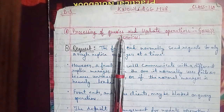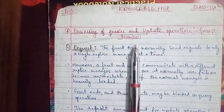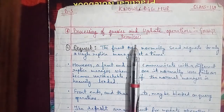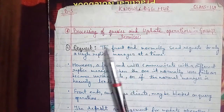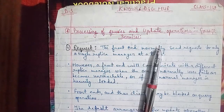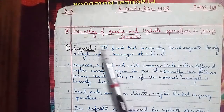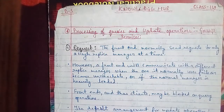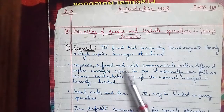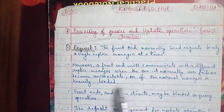Let's start today's topic: processing of queries and update operations in Gossip services. Last class we covered Gossip architecture, so please go through it first. The six steps are: first, Request; second, Update Response; third, Coordination; fourth, Execution; fifth, Query Response; and sixth, Agreement.